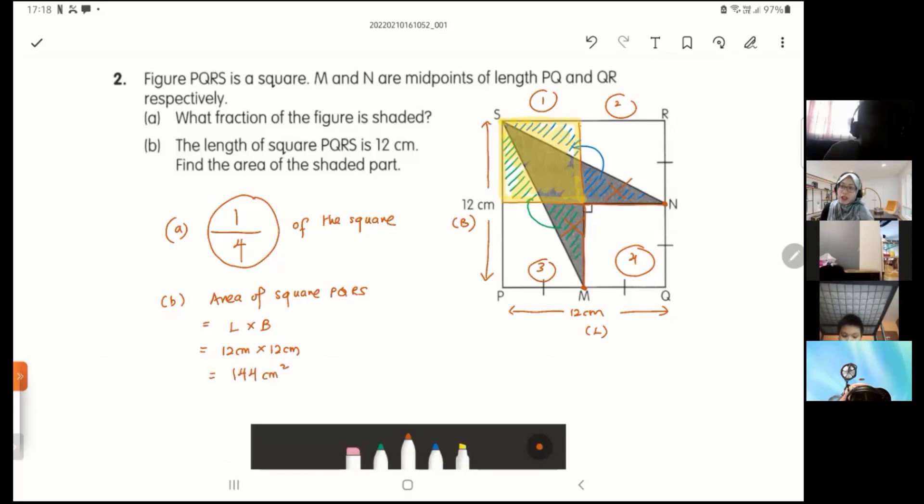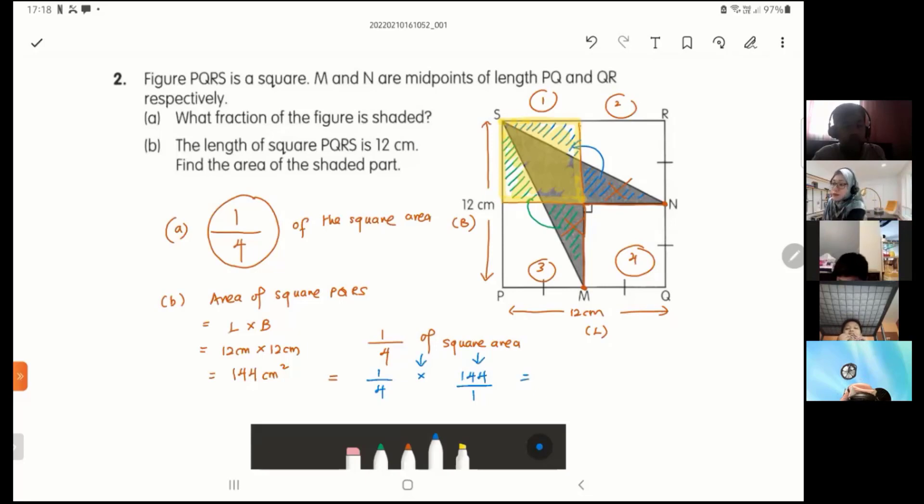Is that what I want? No. I want the shaded part. Remember, shaded part is one quarter of the square from the first one that I found out just now. So one quarter of the square area will be one quarter of means times the square area means 144 over one. So I can take 144 and divide it by 4. Divide by 4 is 1, divide by 4 is 36. 36 cm squared. Answer.